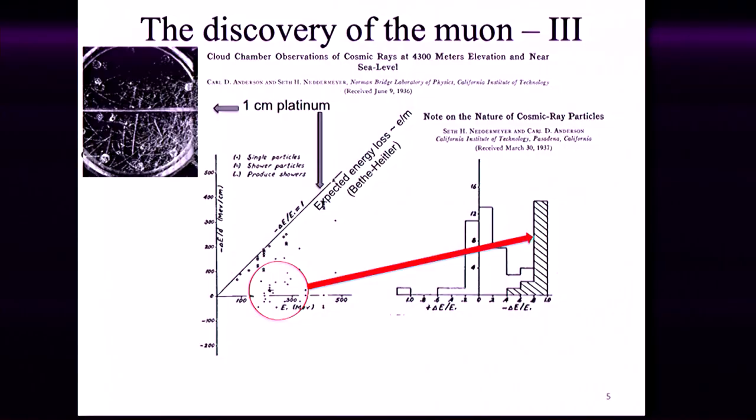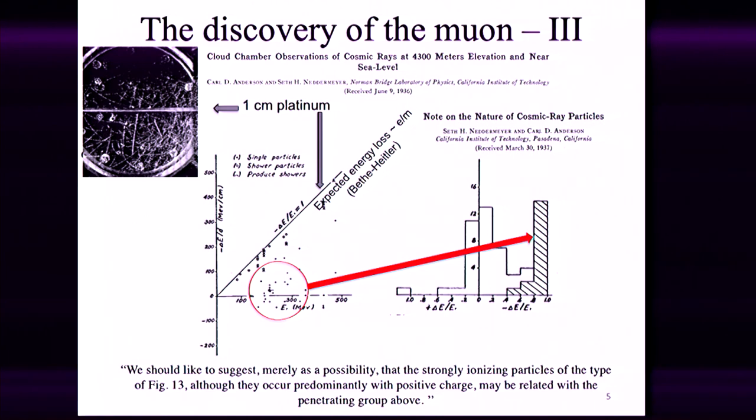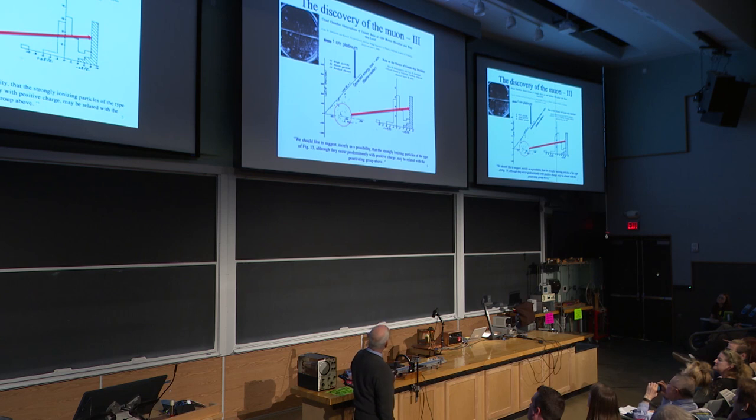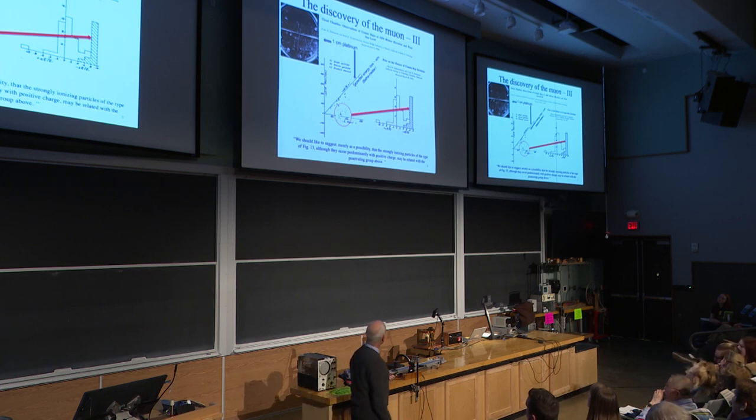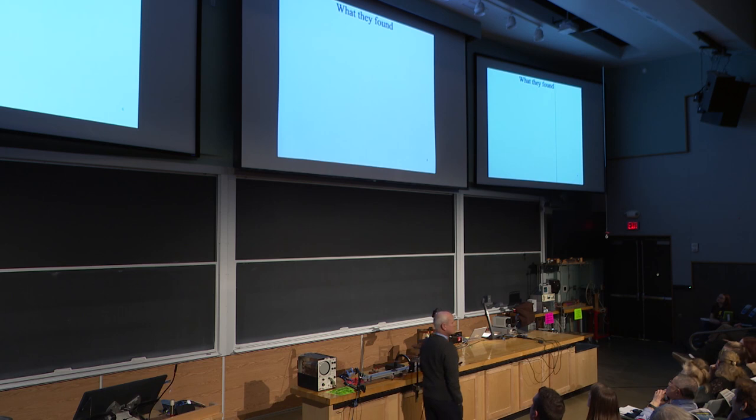And so it's those events in the red circle that are in the shaded region here. So he suggests, writing as we can't get a paper published like this these days, 'We should like to suggest merely as a possibility that the strongly ionizing particles of the type in figure 13 in the upper left, although they occurred predominantly with positive charge, but sometimes with negative charge, may be related with this penetrating group in the red circle above.' So just to summarize what they found, that particles heavier than electrons but lighter than protons existed. So they were medium mass or meson particles.